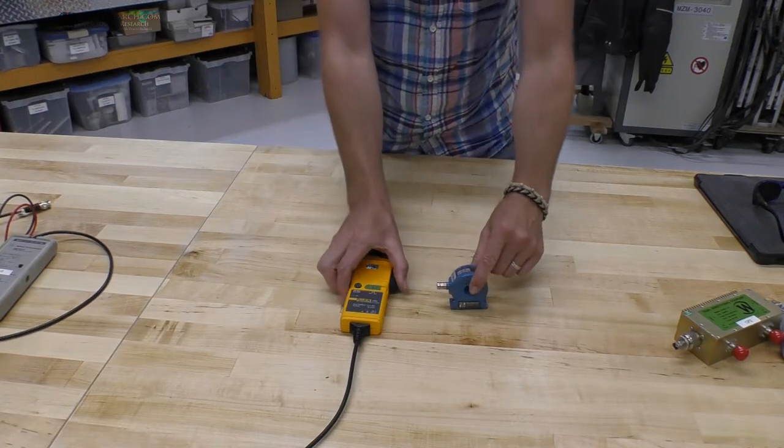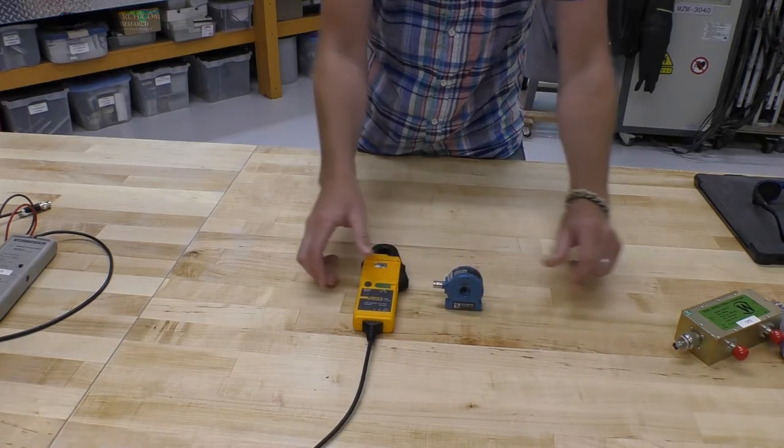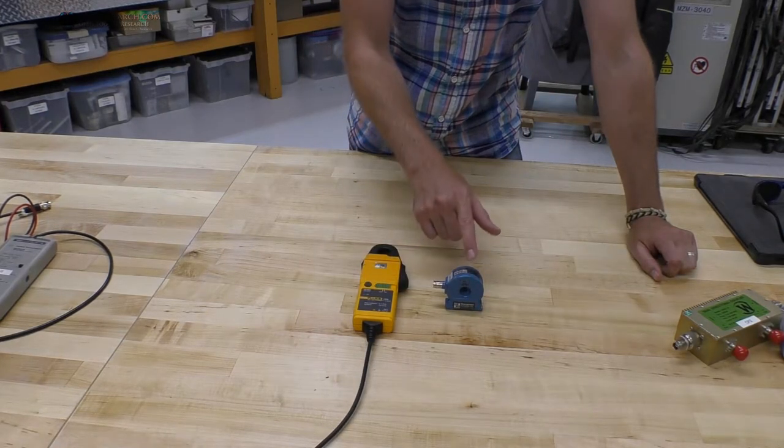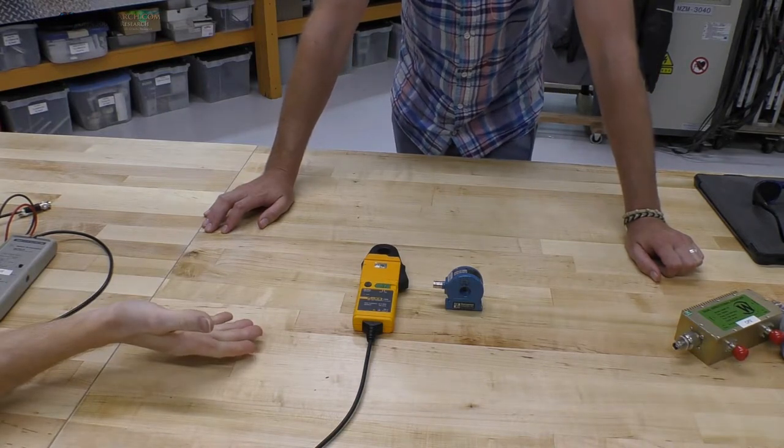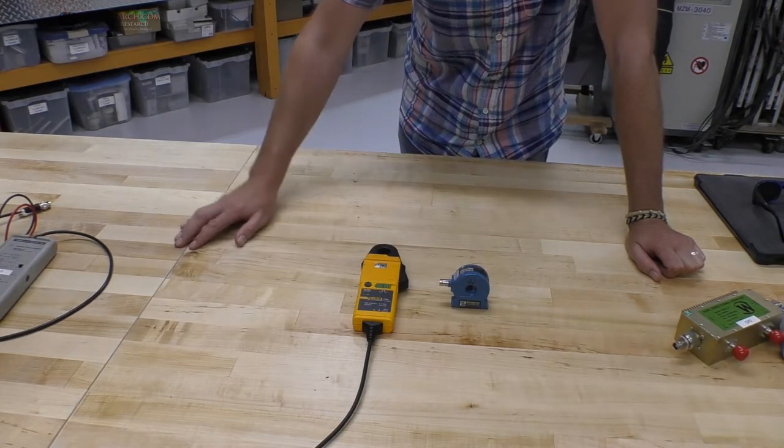So what you've got between these two probes is coverage from DC all the way up to 10 megahertz for any type of power system. And these plug into the oscilloscope? Yep. They both go via BNC to the oscilloscope.